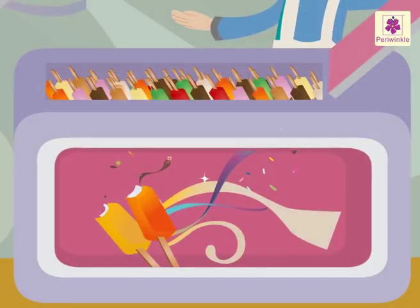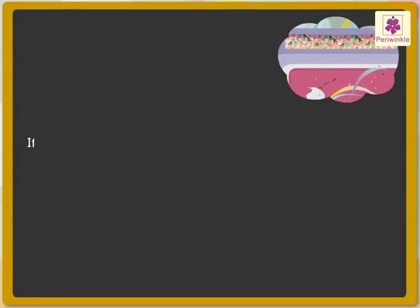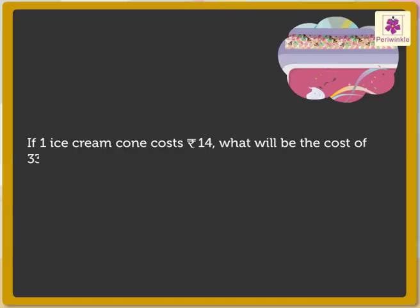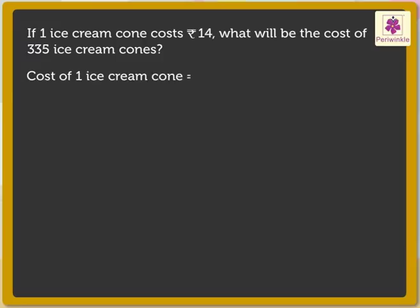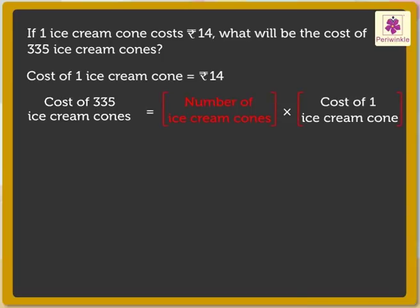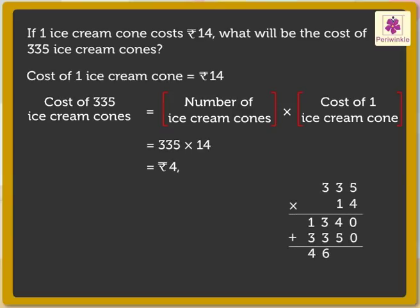Let us have them. Look, there are so many yummy ice cream cones too. If one ice cream cone costs 14 rupees, what will be the cost of 335 ice cream cones? Cost of one ice cream cone is equal to 14 rupees. To find out cost of 335 ice cream cones, we multiply the number of ice cream cones with the cost of one ice cream cone. The cost of 335 ice cream cones is equal to 4,690 rupees.